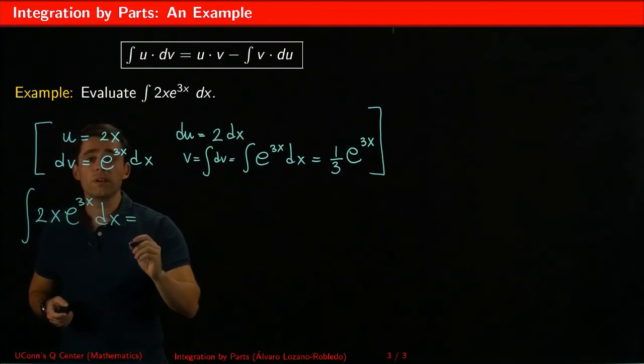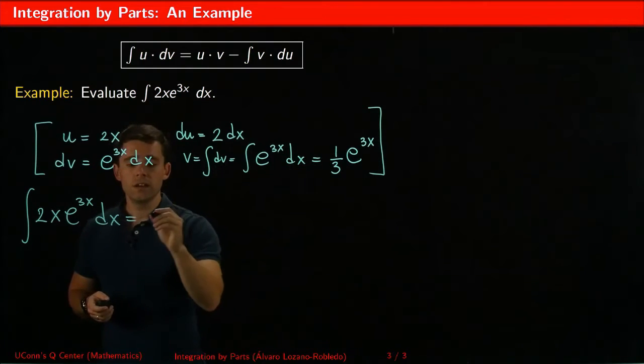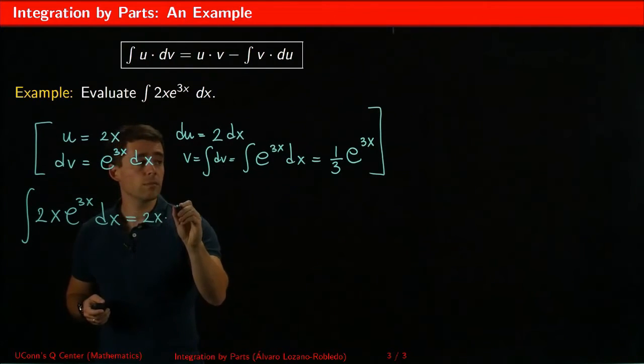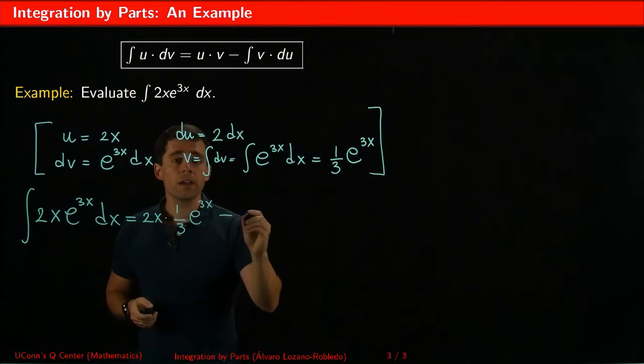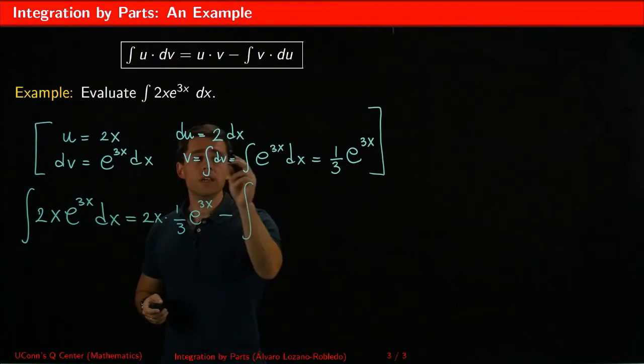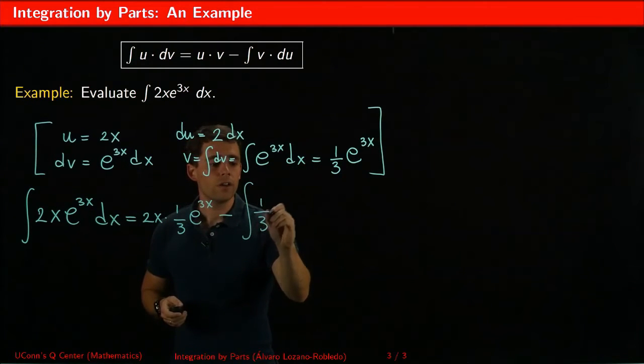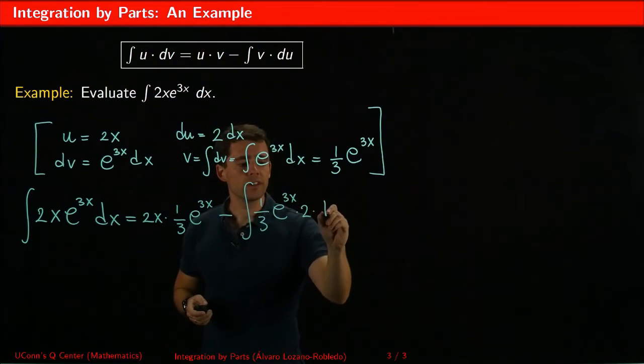That will be u times v, so here is u times v. So u is 2x times a third of e to the 3x minus the integral of v du. V is again a third of e to the 3x times du which is 2 dx.